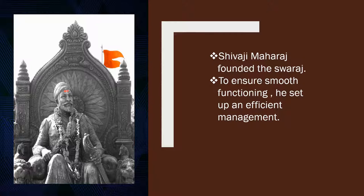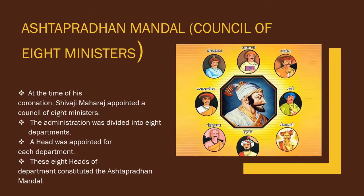To ensure smooth management of the Swaraj and people's welfare, Shivaji Maharaj set up an efficient administration. We will learn about it in this chapter. At the time of his coronation, he appointed a council of eight ministers called the Ashtapradhan Mandal. When Swaraj was established as a sovereign state, administration was divided into eight departments.